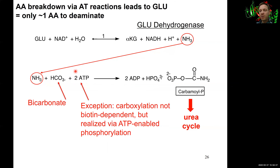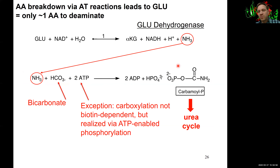This reaction is an exception to what we've seen before, where carboxylations require biotin as a cofactor. Here we're actually not using biotin — instead we use the energy released from the hydrolysis of two ATPs to bring about the condensation of the ammonium group with bicarbonate. The product is carbamoyl phosphate. You should remember the name and the reaction mechanism as an exception to typically biotin-dependent carboxylations. This becomes the first intermediate of the urea cycle.